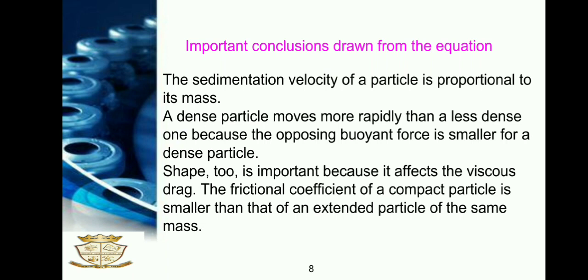These are the important conclusions drawn from the equation. The sedimentation velocity of a particle is proportional to its mass. A dense particle moves more rapidly than a less dense one because the opposing buoyant force is smaller for a dense particle. Shape is also important because it affects the viscous drag. The frictional coefficient of a compact particle is smaller than that of an extended particle of the same mass. The sedimentation velocity also depends on the density of the solution.